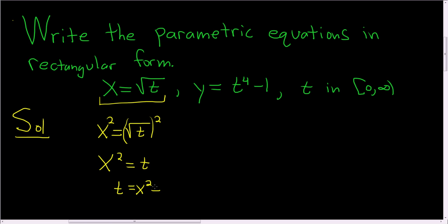Now that we've solved for t, what we can do is take this t and plug it into this equation. So y is equal to t to the fourth, but our t is x squared. So this is x squared to the fourth and then minus 1. So this is y equals, and then 4 times 2 is 8. So this is x to the eighth minus 1. And that's the rectangular form of the parametric equations.